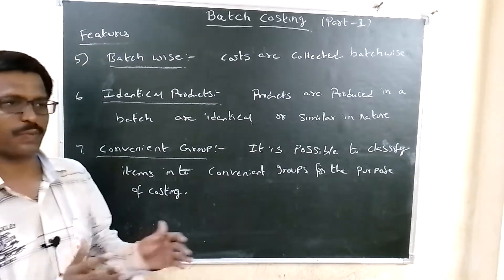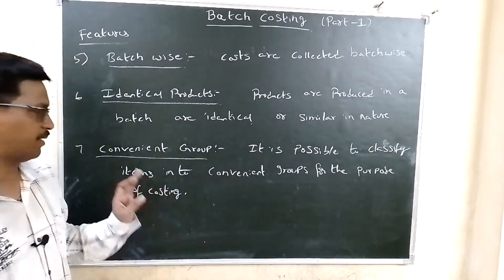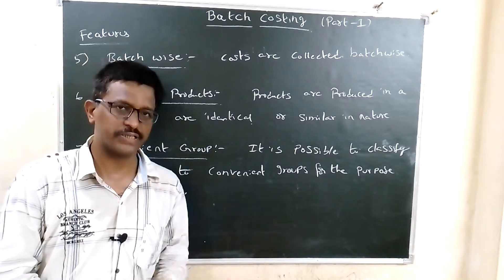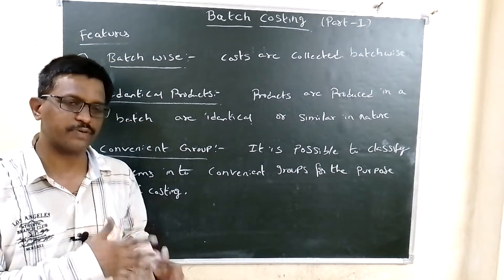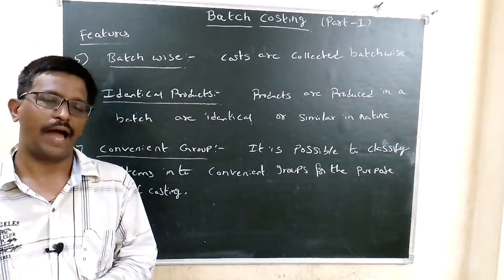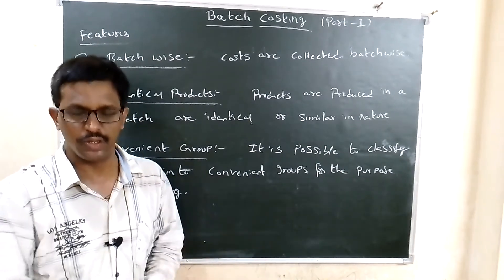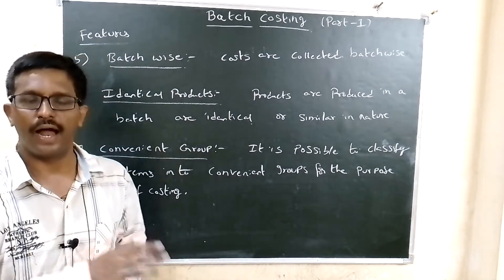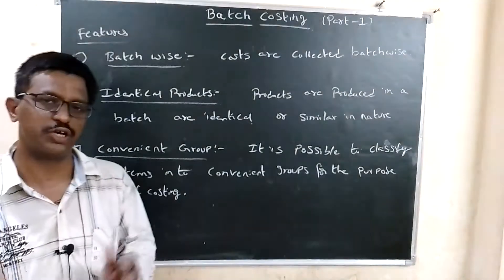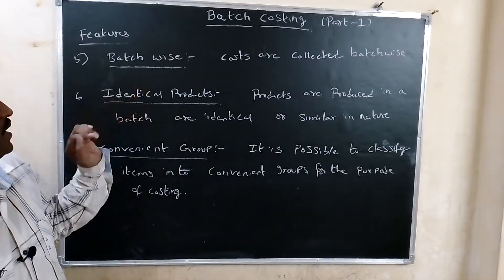It is possible to classify items into convenient groups. For example: cosmetics, soaps, toothpaste, brushes — a number of items. Food items. These separate items are classified batch-wise and the cost is determined accordingly. Those are the features in batch costing.